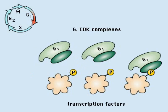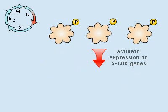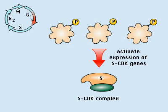One target of these transcription factors are genes encoding components of the S-phase CDK complex. At this point, S-phase CDK function is blocked by a specific inhibitor.